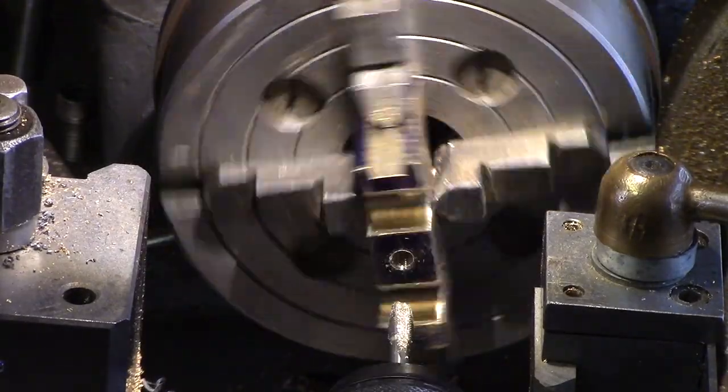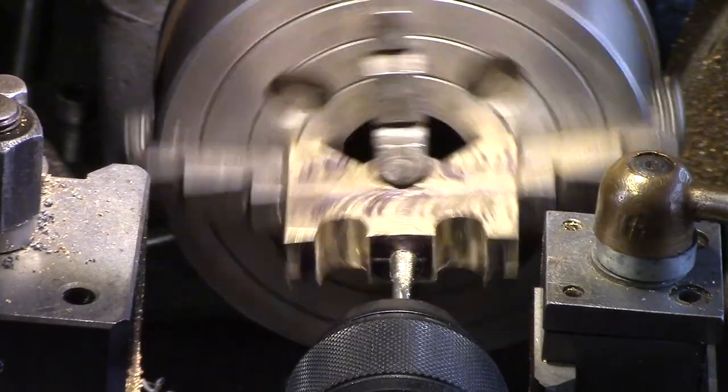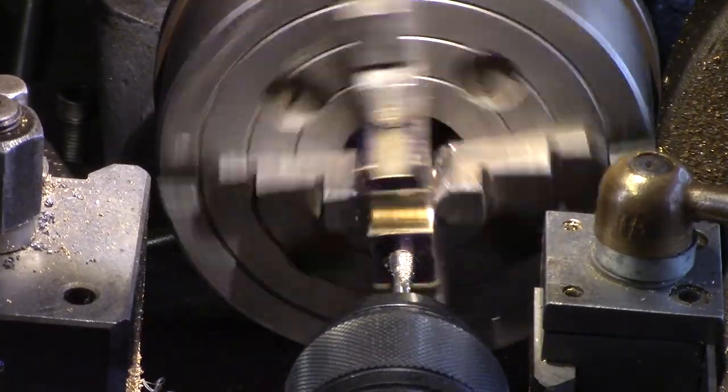This was then set up centrally in the four-jaw chuck on the lathe and the hole for the piston rod was drilled and tapped out to M5.